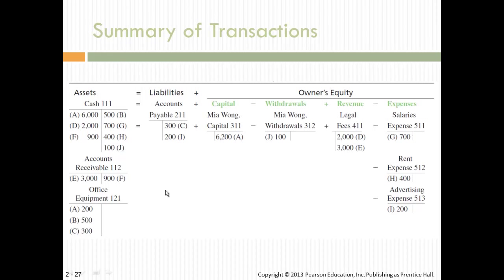Here's the big picture. On the left side of the equal sign are all your assets: cash, accounts receivable, and equipment. Liabilities include accounts payable. Owner's equity accounts include capital with a normal credit balance, withdrawals with a normal debit balance, revenue with a normal credit balance, and expenses with a normal debit balance. All of this must satisfy: liabilities plus equity equals assets.